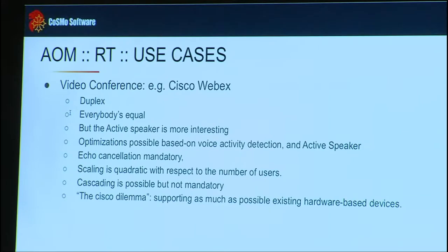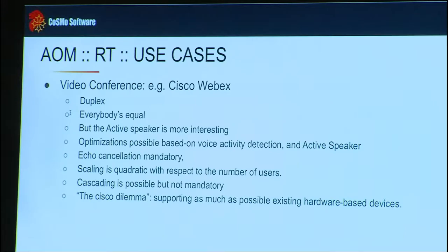Within real-time there is another distinction. Video conferencing is two-way — everybody is roughly equal. You can have interesting optimizations to scale: if you have voice activity detection and active speaker detection, you can reduce the video rendering to the five last active speakers. That means whatever the number of attendees, you only push through the five last active speakers, so you scale very well. Cascading is possible but not mandatory — when you have more than 20 people, they start talking over each other anyway.